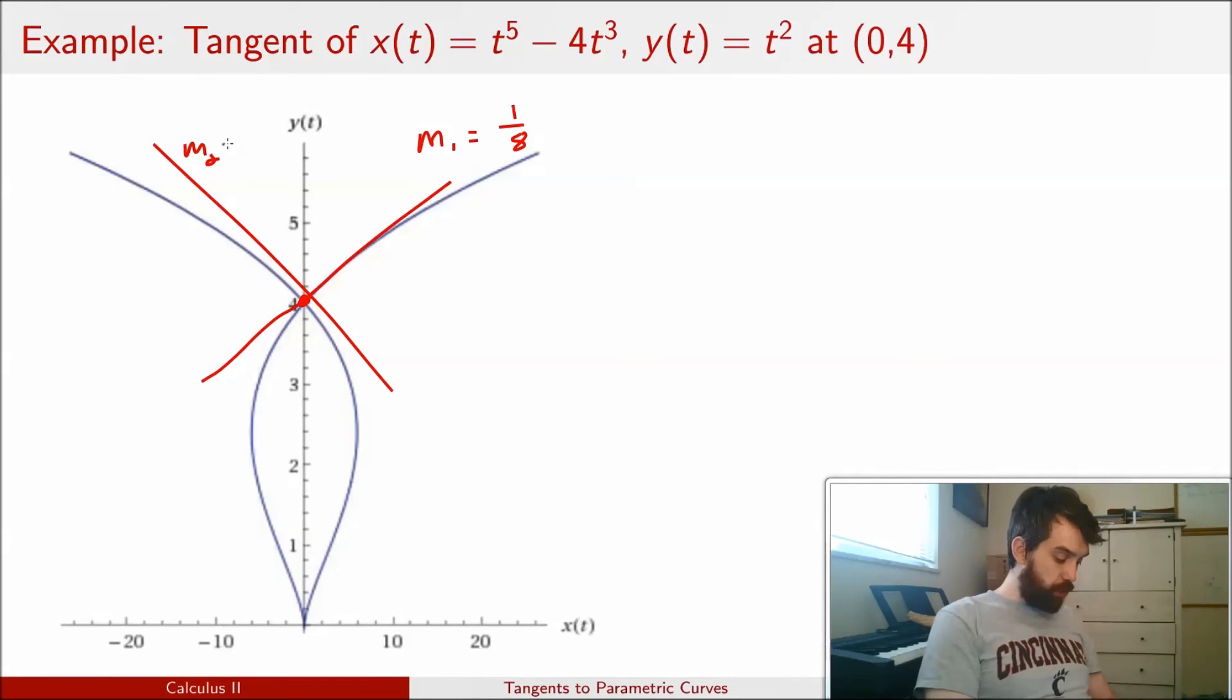And then I have this other one, m2, which is believable that it has a slope of minus 1/8. And note, by the way, that the x and y are scaled differently if you don't think these slopes look appropriately right, but they are.